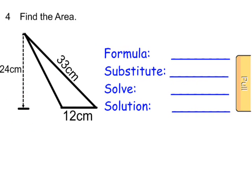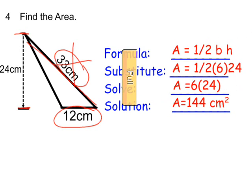Now in this example, be careful — the base is 12, a nice even number. A lot of students will look at this shape and think a slanted side is the height, but that is not the height of the triangle. The height is over here: 24 centimeters. Since both are even, I take one half of 12, which is 6, times the height of 24. This triangle has an area of 144 square centimeters.